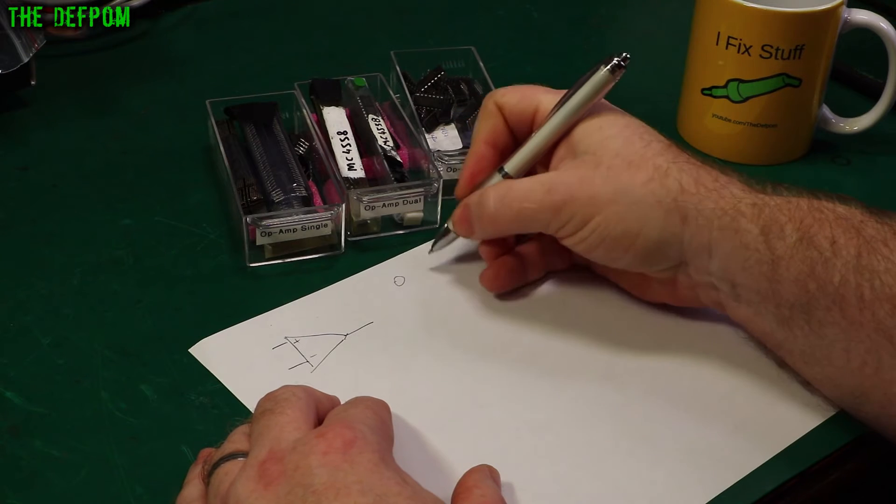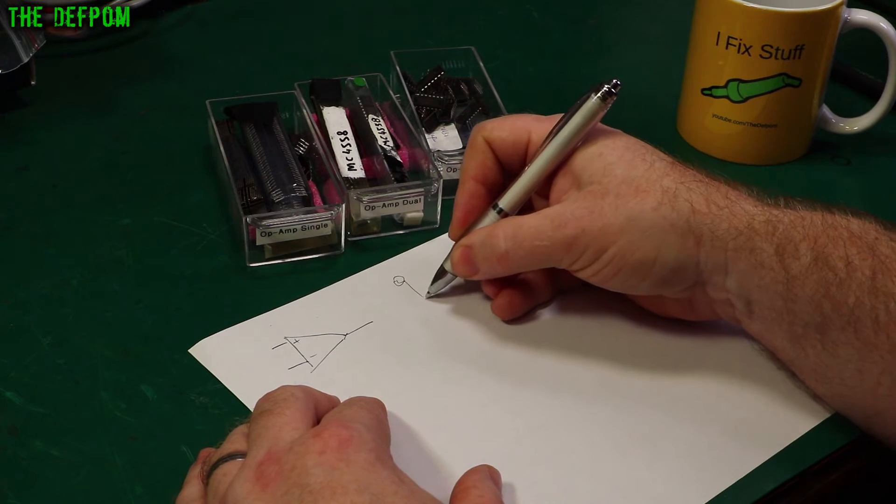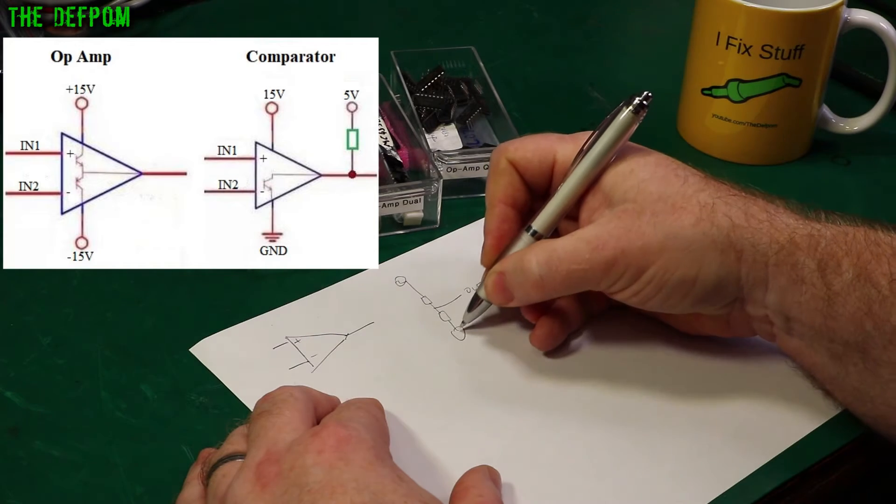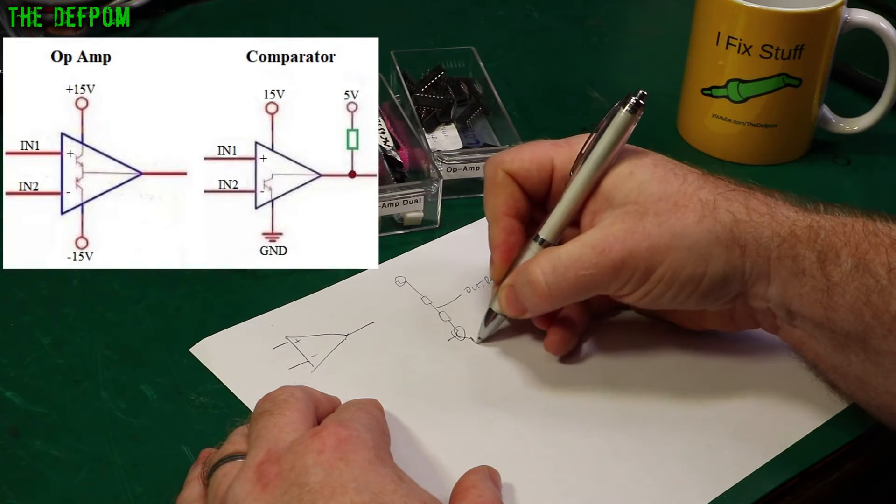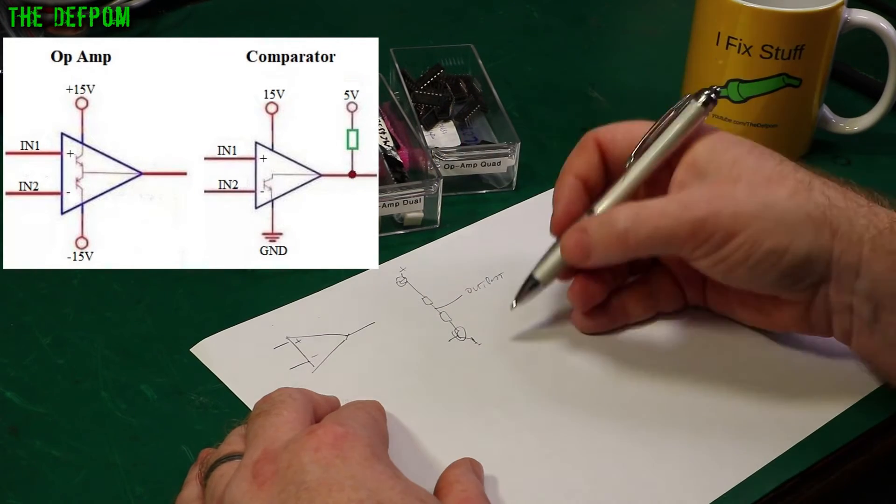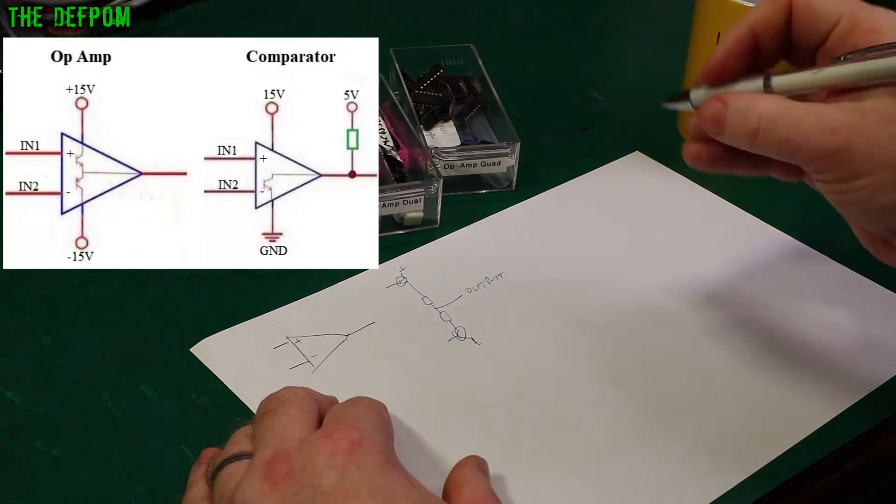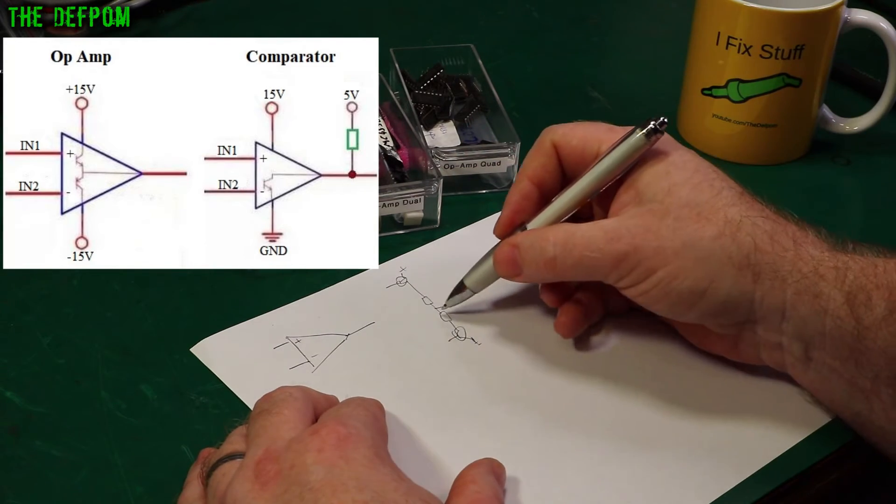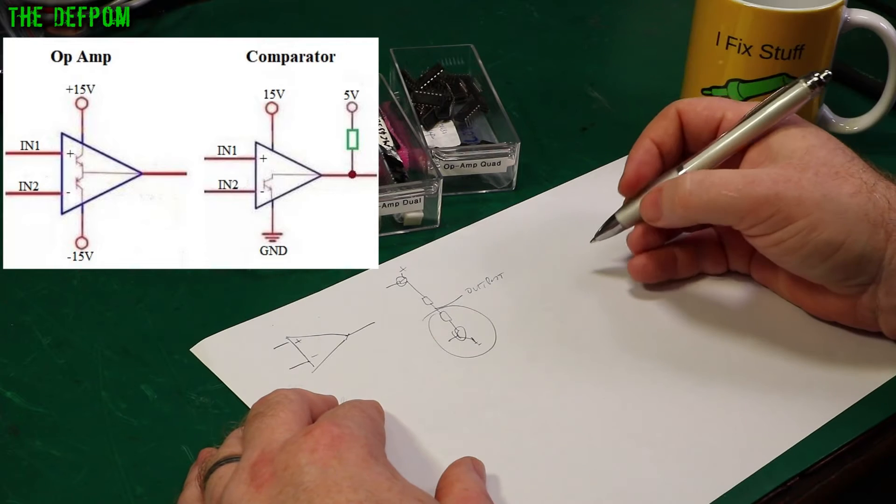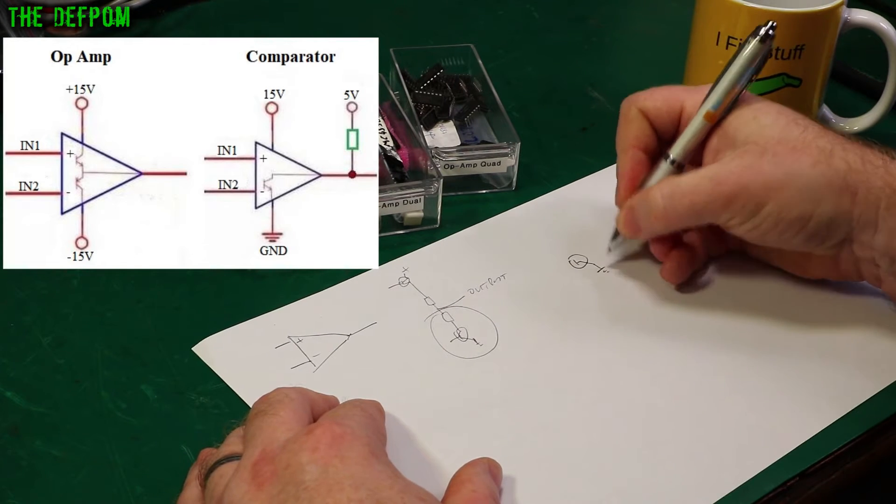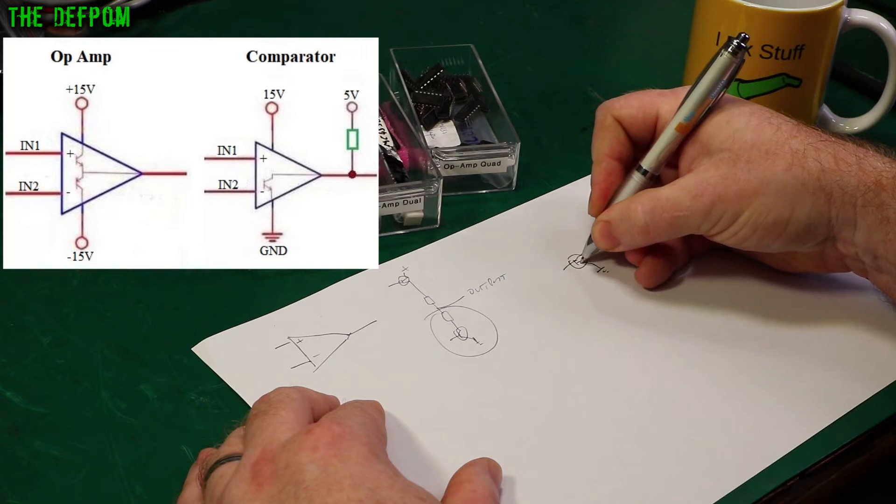An op-amp has a push-pull transistor setup with some resistors inside and there's your output here with another transistor doing push-pull. So it's a push-pull output internally to the op-amp. A comparator is an open collector so you just got that bit only instead, so it's only going to ground.